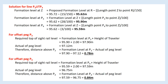For offset peg P4: formation level at P4 = formation level at Z − (length P4 to Z / 100) = 95.62 − (3/100) = 95.59 m. Required top-of-site-rail level = 95.59 + 2.00 = 97.59 m. Actual peg level = 96.75 m. Therefore, height of site rail above P4 = 97.59 − 96.75 = 0.84 m.